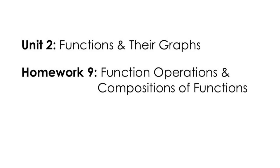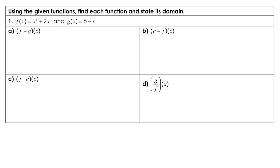We will be going over homework 9. The first part we are looking at adding our functions. So f plus g — function f is x squared plus 2x, and I'm going to add to that 5 minus x. Putting all of this together, it looks like we're going to have x squared plus x plus 5. That is going to give us our answer, and the domain here — this is a polynomial, so it will be all real numbers.